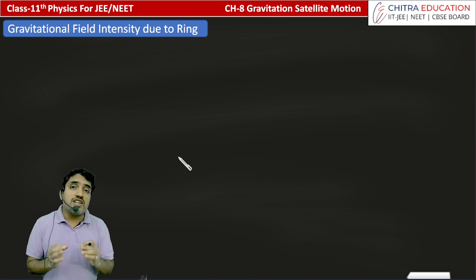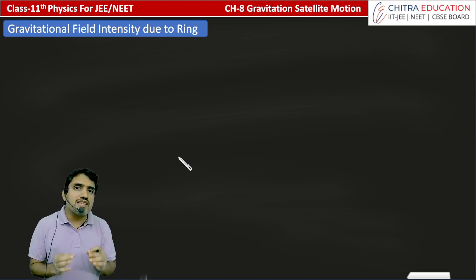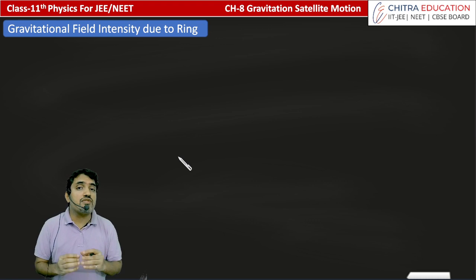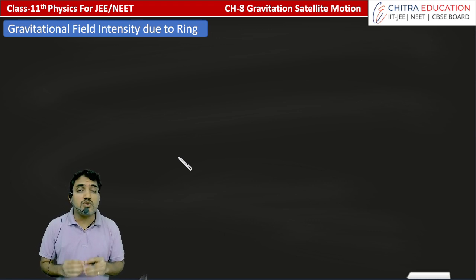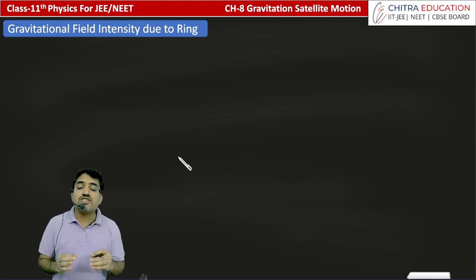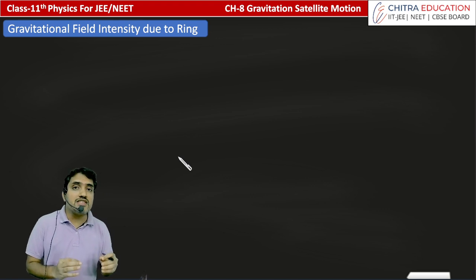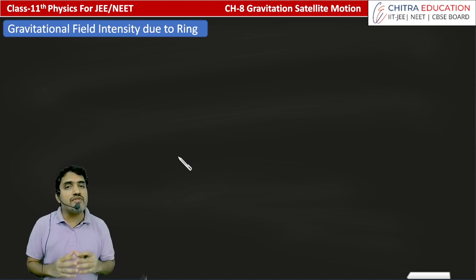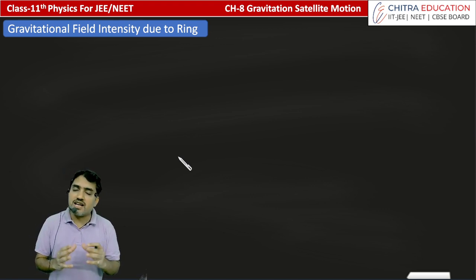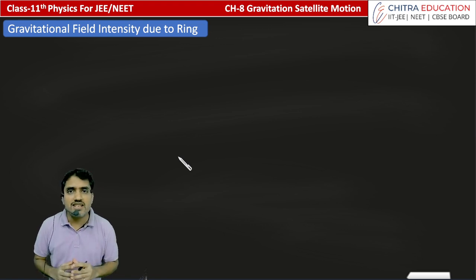For gravitational field, we have a parameter that we measure. We call it gravitational field intensity. We define gravitational field intensity as gravitational force per unit mass. All these concepts we have seen in the last lecture.